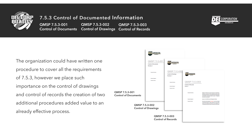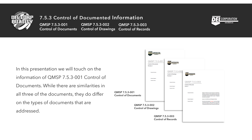The organization could have written one procedure to cover all the requirements of 7.5.3; however, we place such importance on the control of drawings and control of records that the creation of two additional procedures added value to an already effective process. In this presentation we will touch on the information of QMSP 7.5.3-001 Control of Documents.